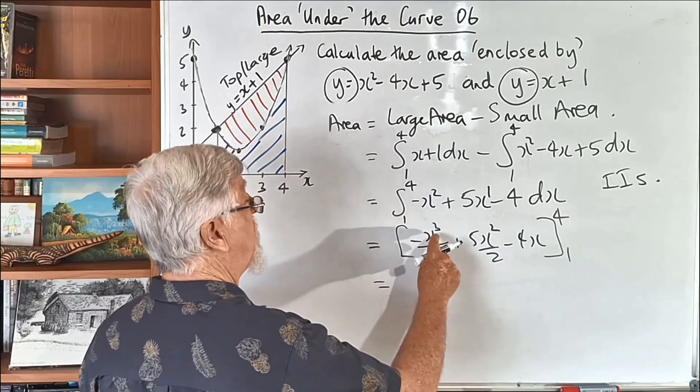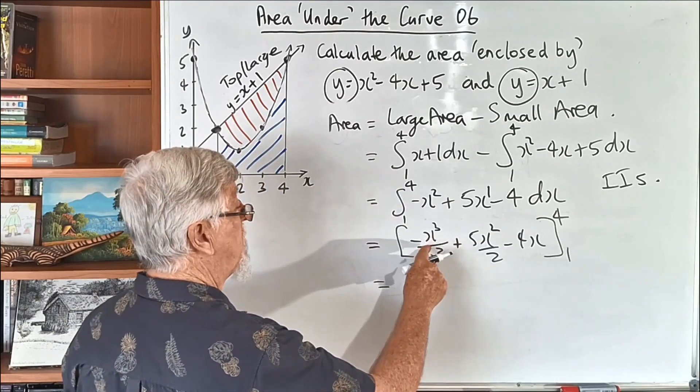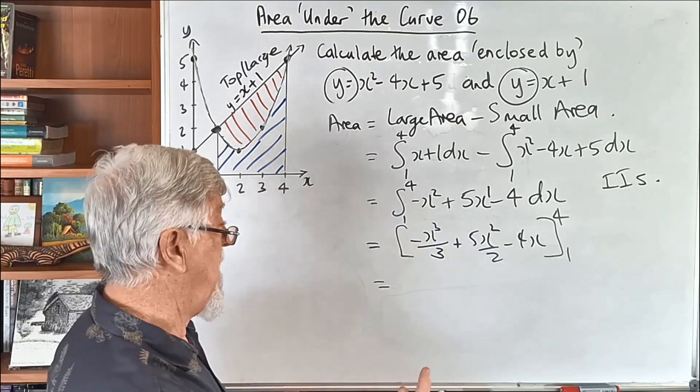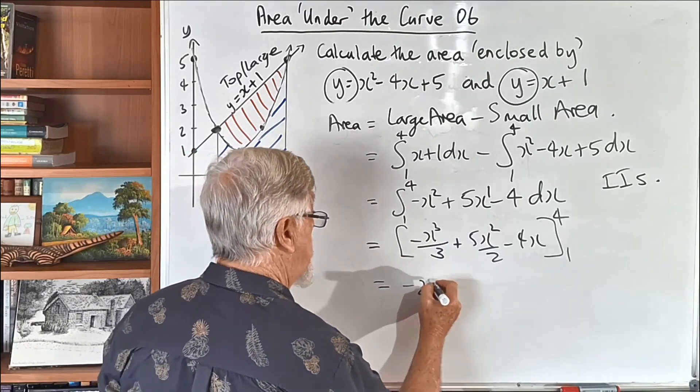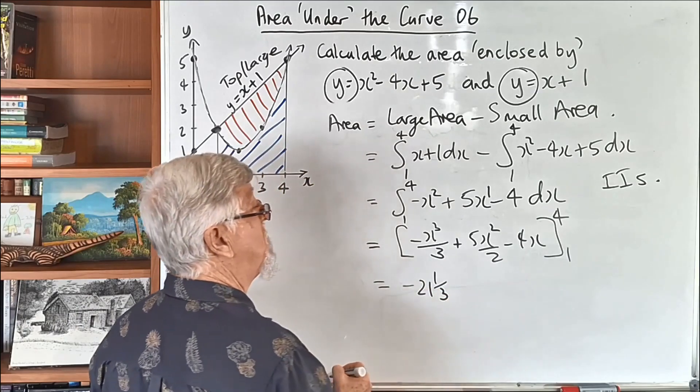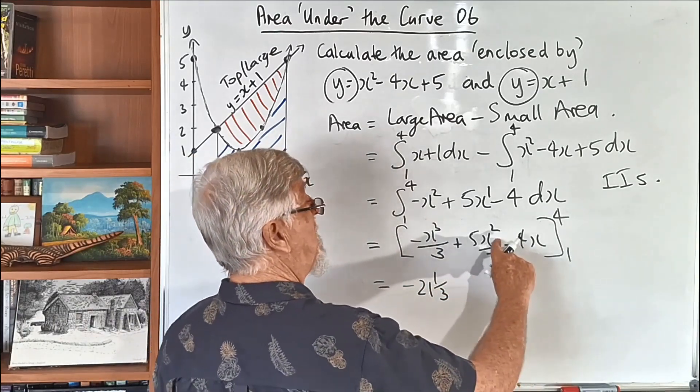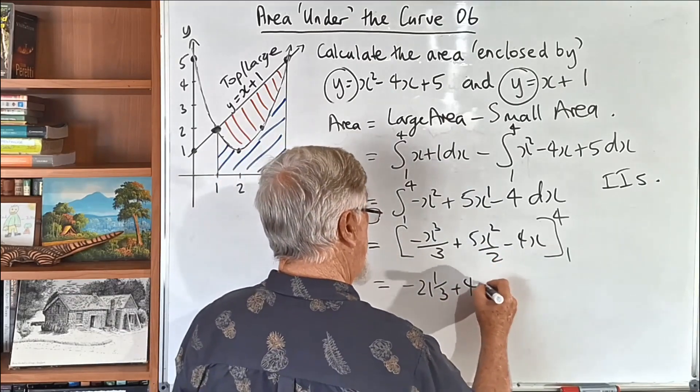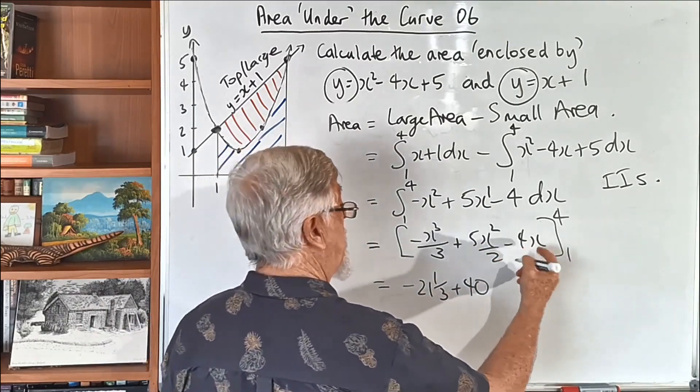So, if I substitute 4, 4x4x4 is 64 on 3, and I'm going to shortcut that because we've already seen the calculation, that's 21 and a third, so it's minus 21 and a third. Put it in the fourth. 16 by 5, or 80 on 2, which is 40, hopefully I've not made any mistakes, minus 16.